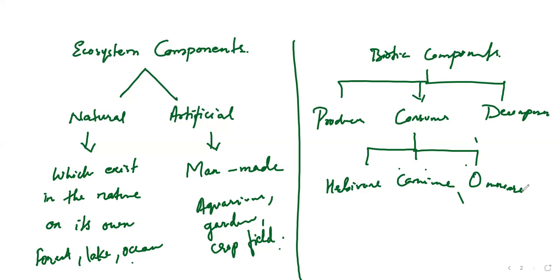Now, producer, consumer, decomposer — this is all on the basis of nutrition components. Producers, that is the first phase, basically means plants.